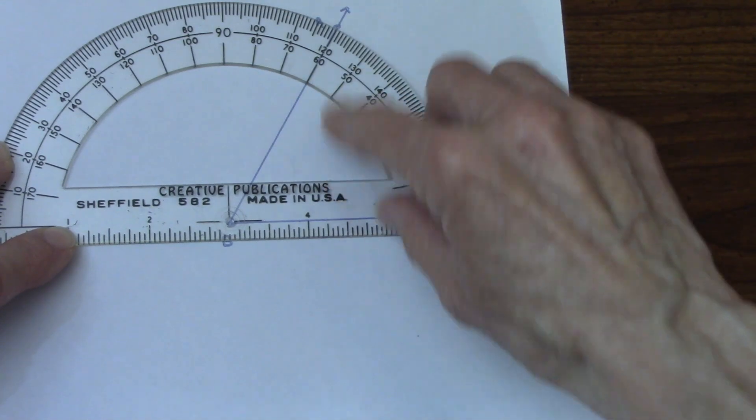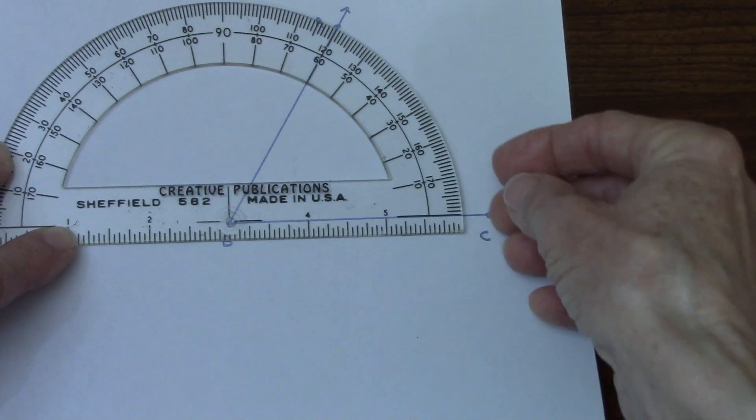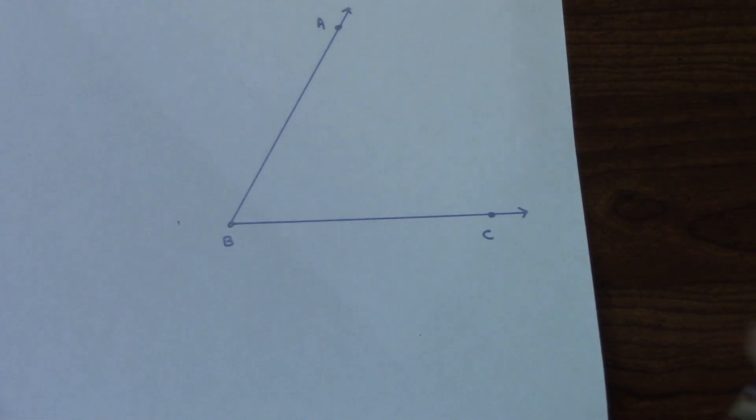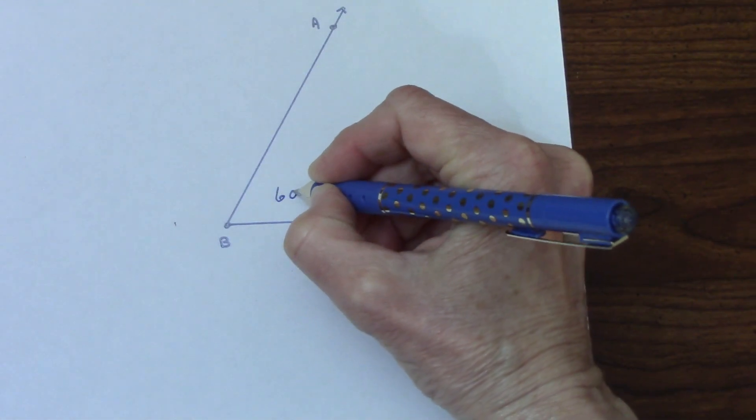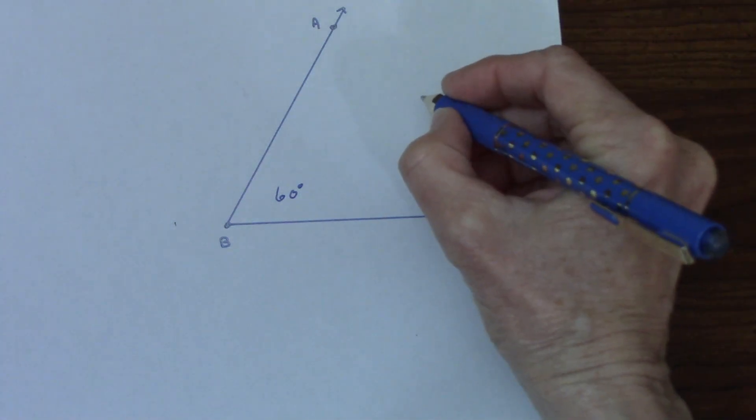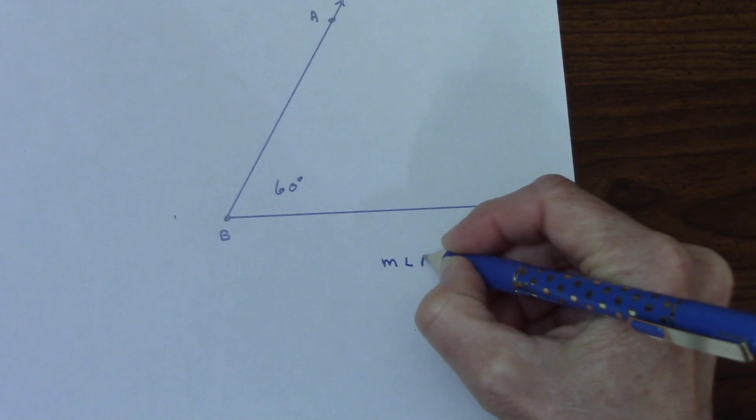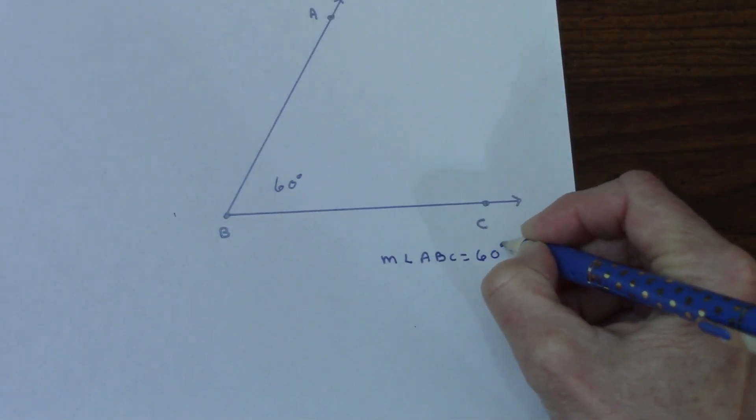I also know I'm going to use the sixty and not the hundred and twenty because I see that my angle is less than ninety, and ninety degrees is a corner. So I can label it on the inside as sixty degrees. And I can write that the measure of angle ABC equals sixty degrees.